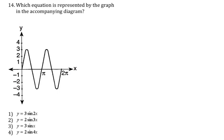Number 14: within 2π, how many cycles do we have? I see one cycle and another cycle — so two cycles. I'm looking at sine of 2x, which is choice 1. It also makes sense because I'm going up and down by three as well.